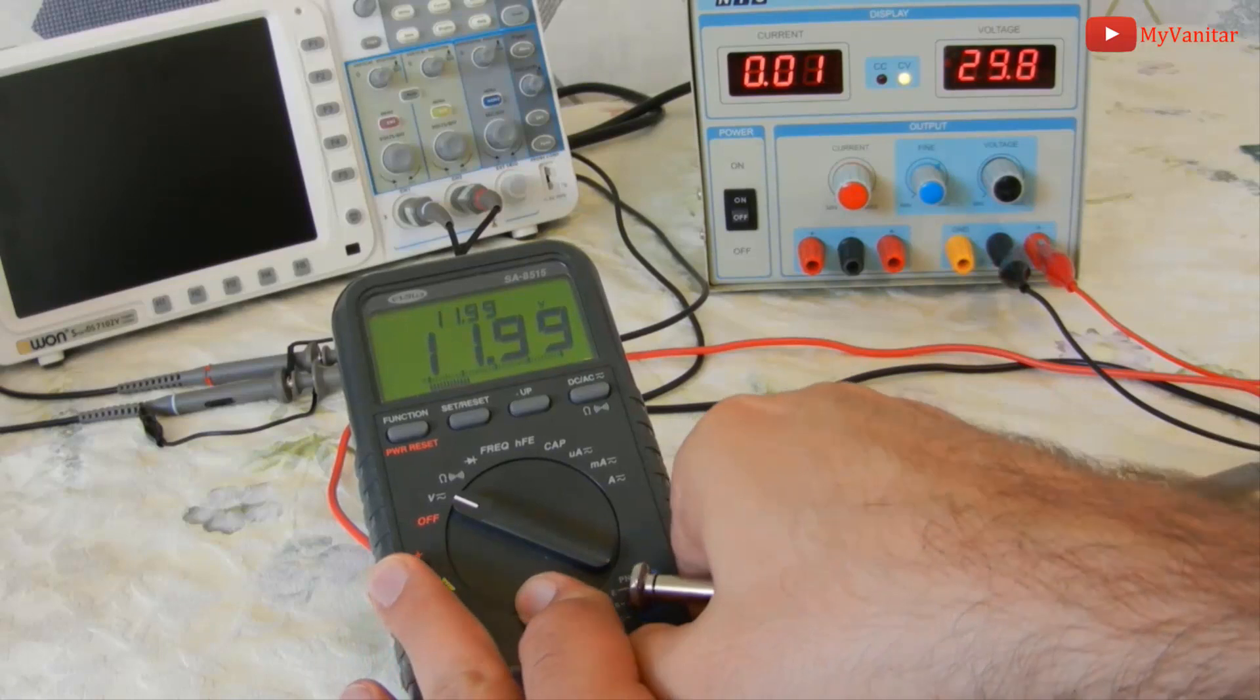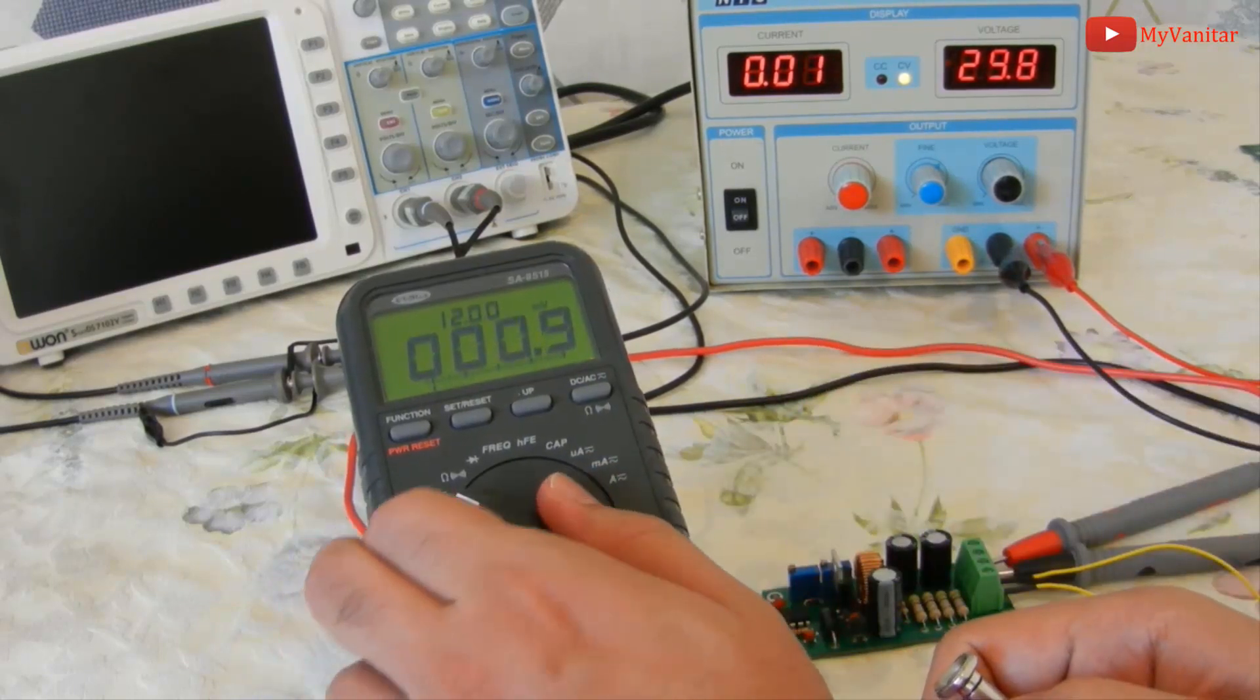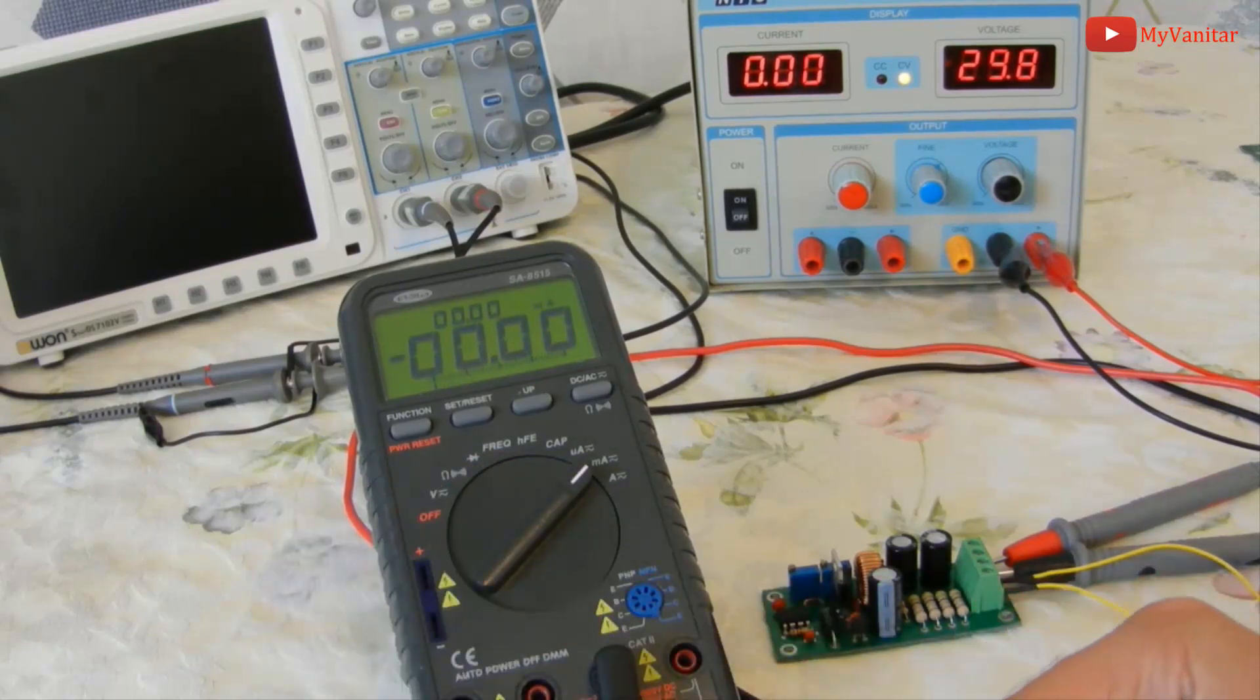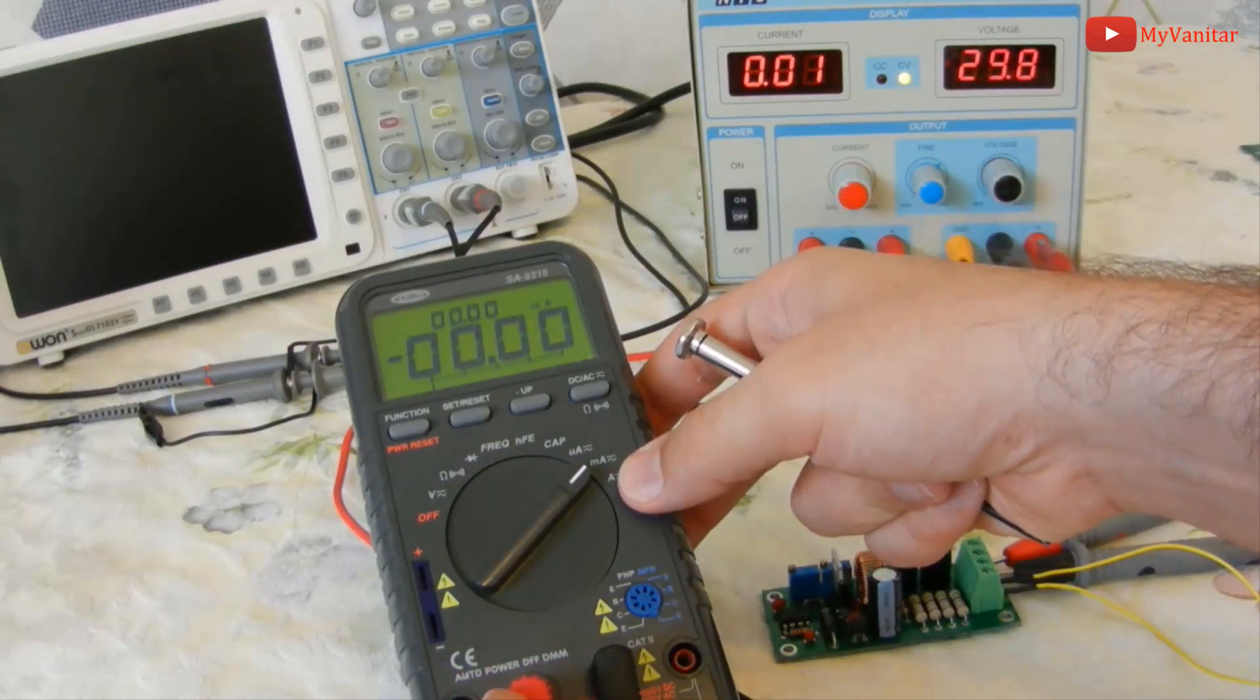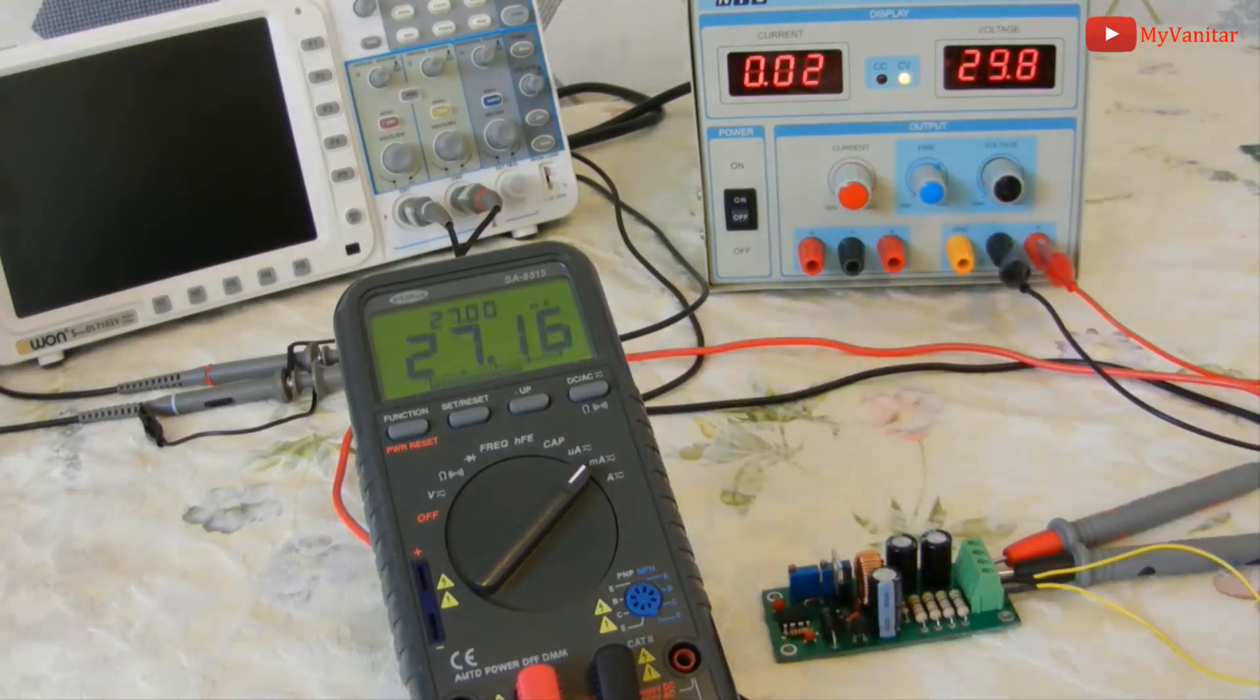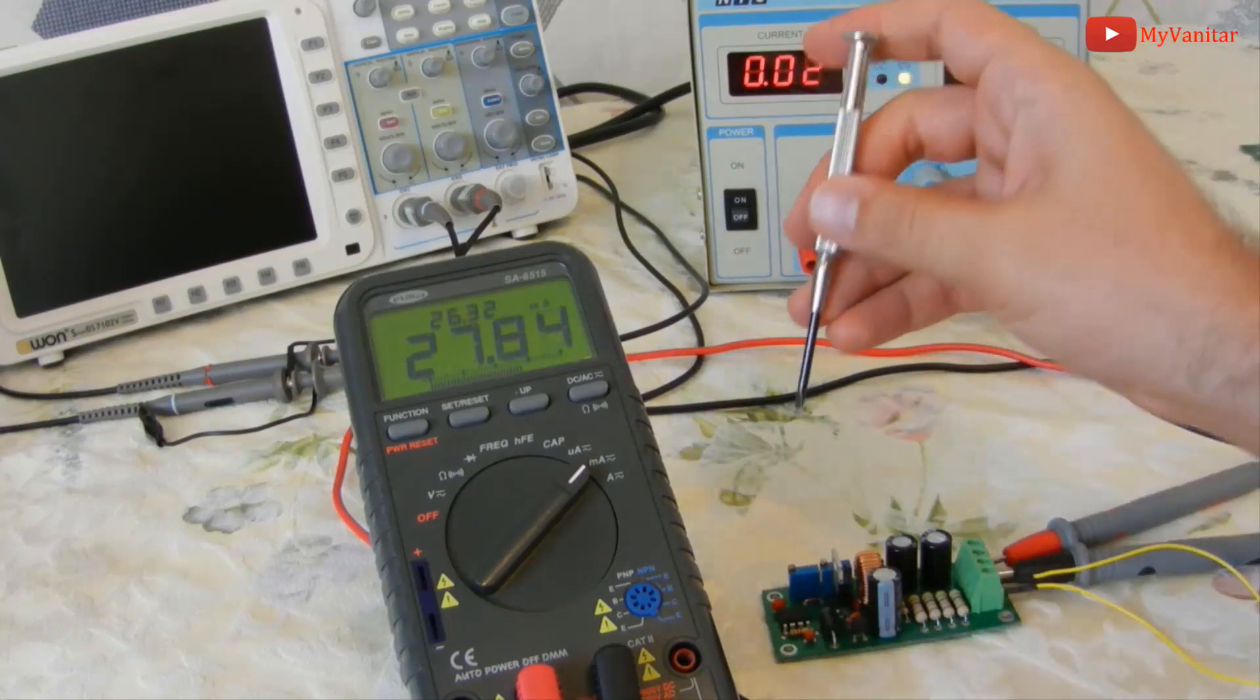Now I have to adjust the multimeter to measure the current. I have to change the probes. As you see, first I put the multimeter on the milliamp current measurement, because I want to show you the minimum current limit of the circuit. As you see, it is around 27 milliamp.